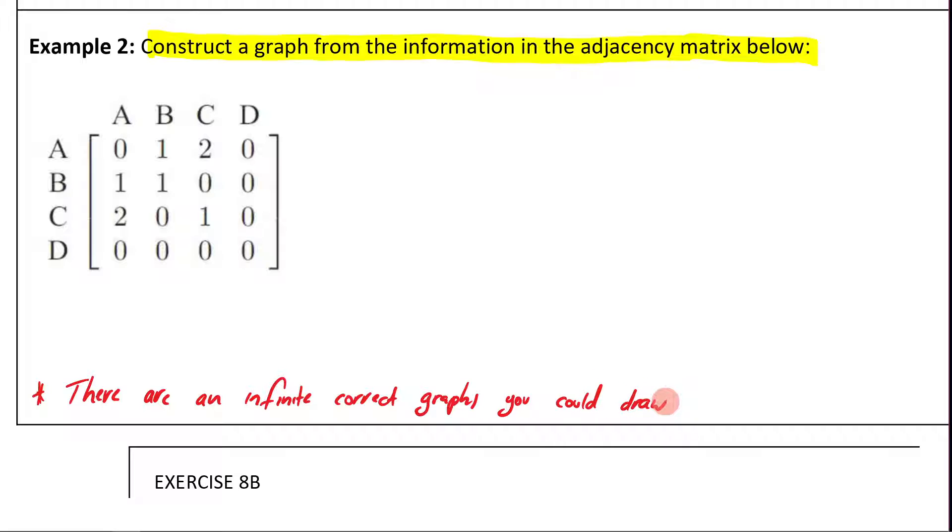So there isn't one right answer here, because remember, you could literally put these points, these vertices, anywhere. I'm just going to choose to put them in a simple square. So we've got A, we've got B, we've got C, we've got D. But would you not agree that I could put these vertices anywhere and then link them up in multiple different ways? So there's an infinite amount of correct answers here. We're just going to do one of them.